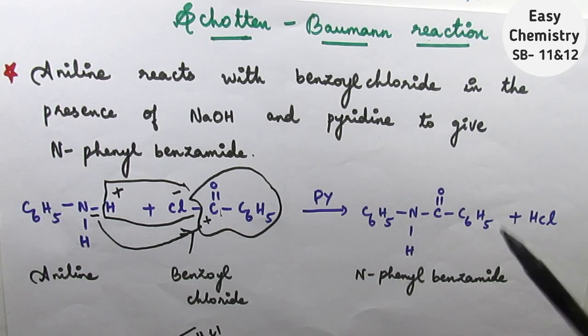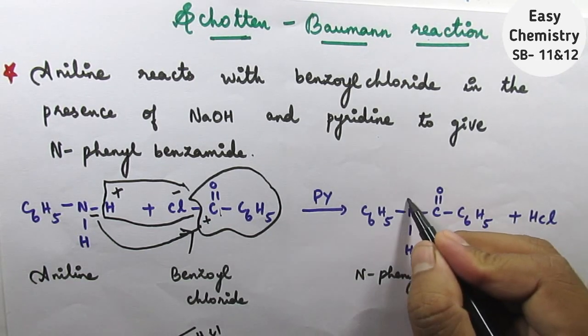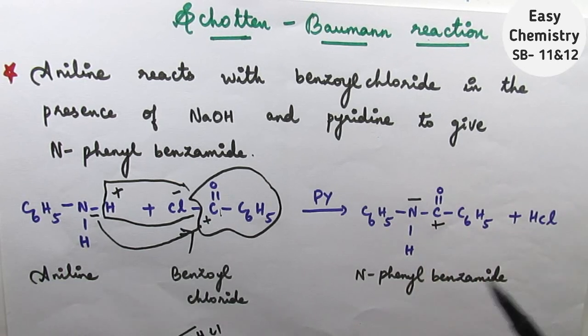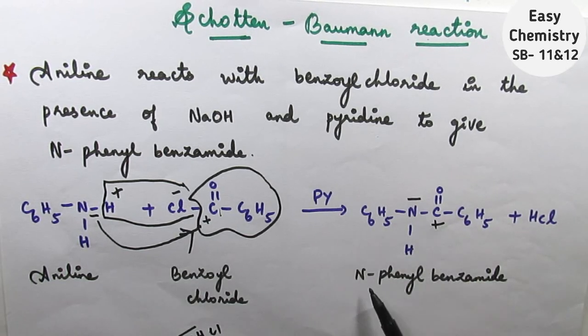C6H5NH. Nitrogen. Minus. Carbon plus. The two. N. Phenyl group. N. Phenyl. Benzamide.